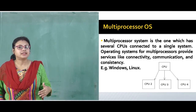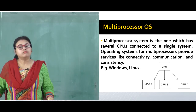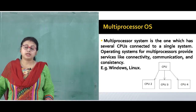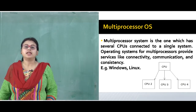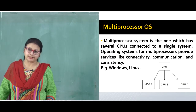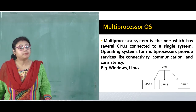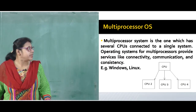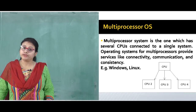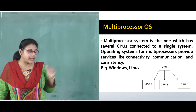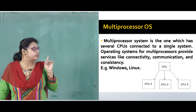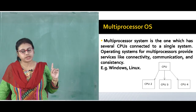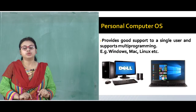The next type is the multi-processor operating system. As the name suggests, this is for multiple processors — several CPUs connected to a single system. Operating systems for multi-processor systems provide services like connectivity, communication, and consistency. Examples are Windows and Linux. As shown in the slide, one single CPU is connected with three additional CPUs simultaneously.